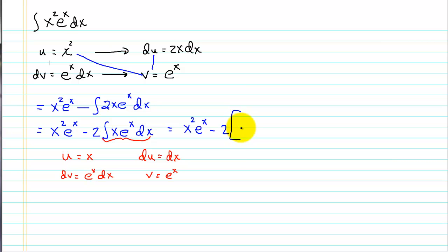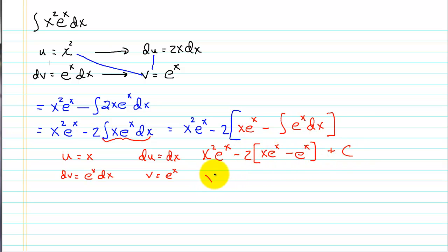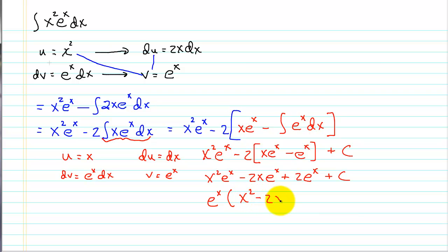We still have x²·eˣ minus 2 times what we're going to replace with this second application of integration by parts. Applying it: u times v is x·eˣ, minus the integral of eˣ dx. Now we have something we can integrate. We add our integration constant and distribute the negative 2, being careful with signs — negative 2 times the negative gives a positive. We can GCF factor out eˣ to write the final answer.